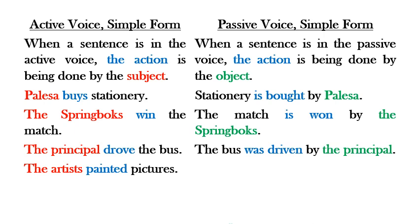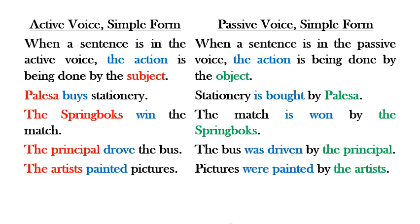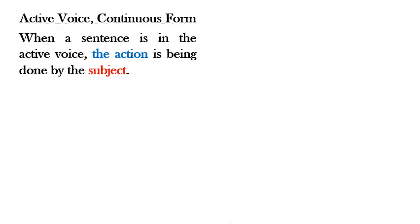Continuing with the passive voice examples: 'The bus was driven by the principal' — the principal is still the one doing the action. And 'Pictures were painted by the artists' — it is the object, the artists, that are doing the action.